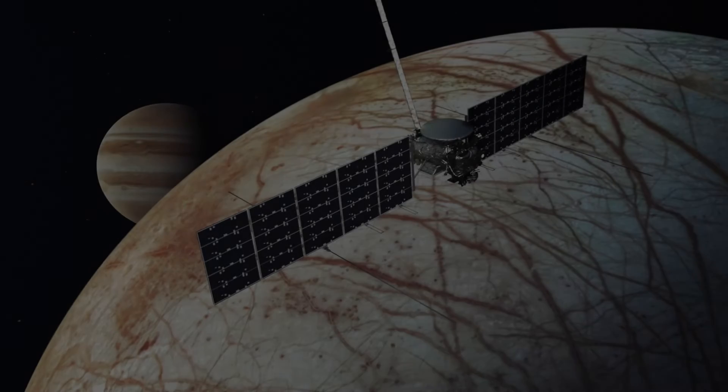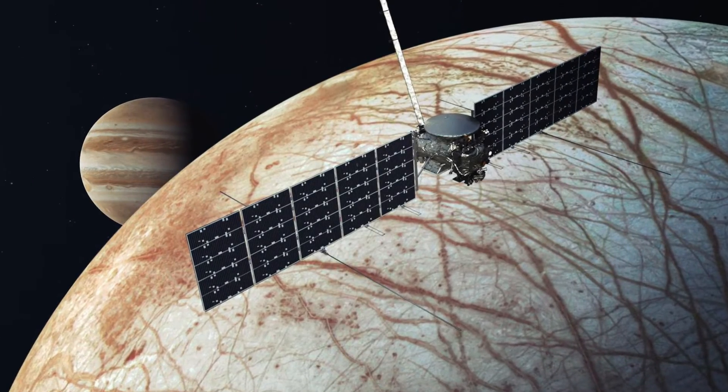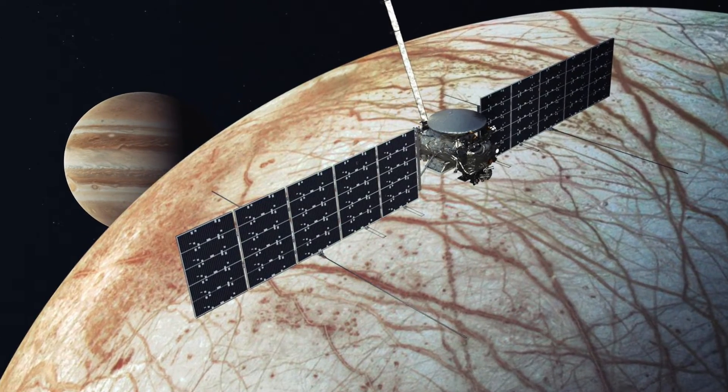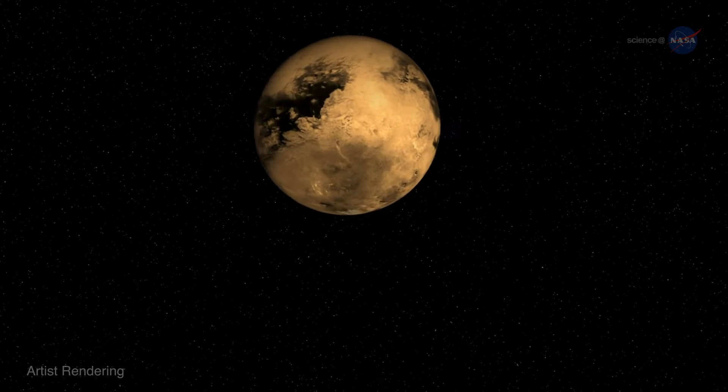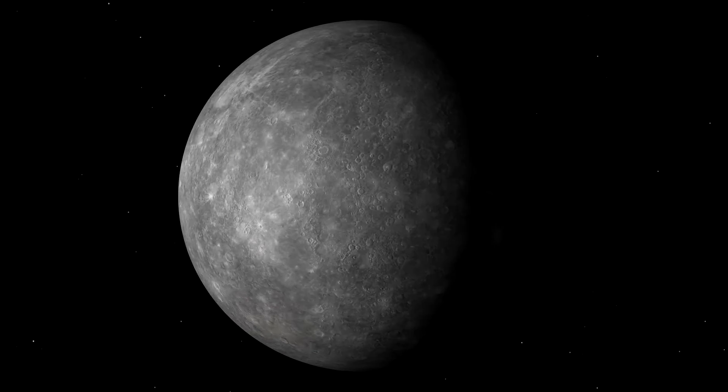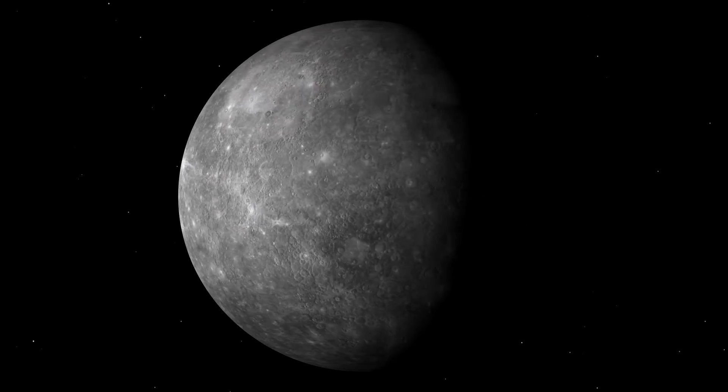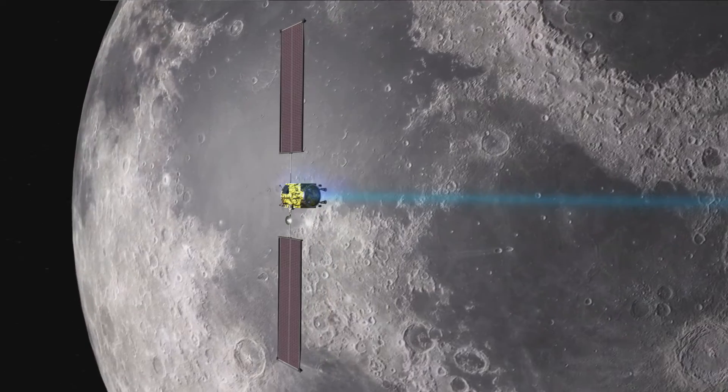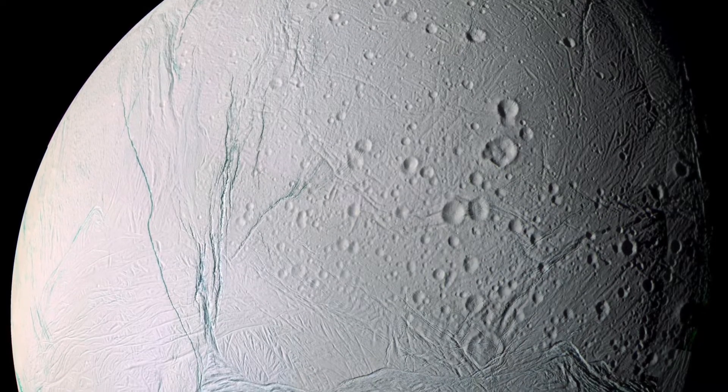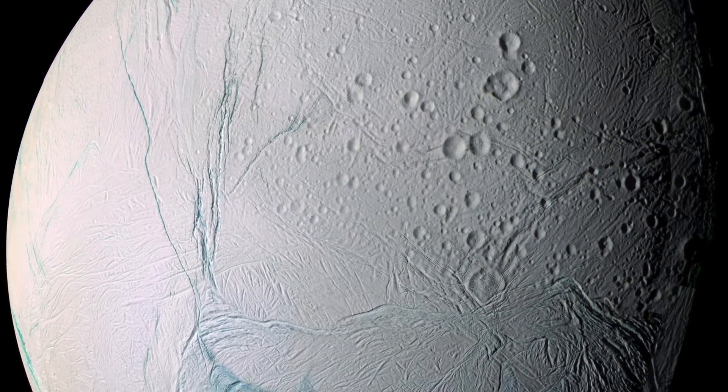Therefore, the ice moons of interest to us include Jupiter's Europa plus Saturn's Enceladus and Titan. Europa and Titan are each about the same size as Mercury or the Earth's Moon, although Titan is considerably heavier. Enceladus is smaller but has the same basic structure as the others.